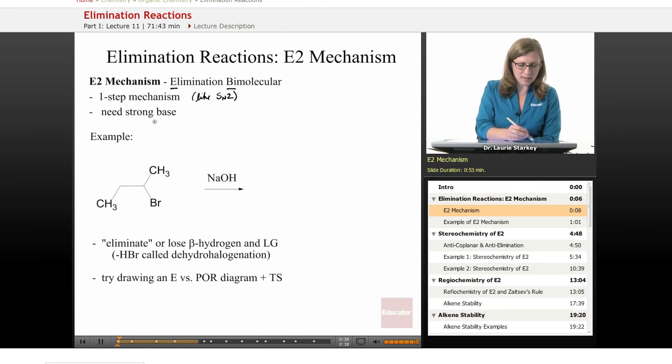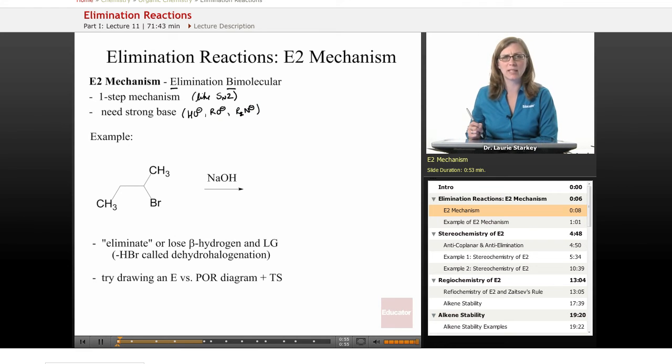Something that the E2 mechanism needs is a strong base. So what are things that we know of as strong bases? Things like hydroxide or alkoxide. Maybe an N- would also be a very strong base. A pretty short list of species that we would describe as strong bases. Those are the kinds of reagents we'll need to do an E2 elimination.